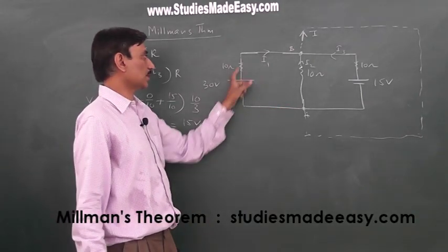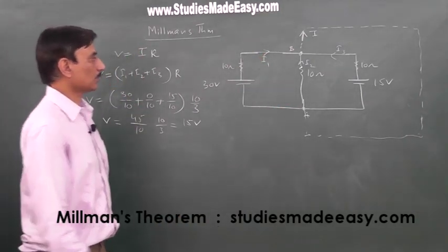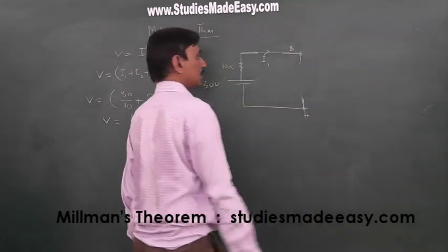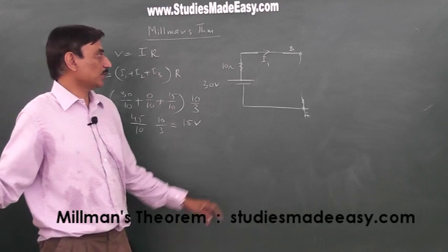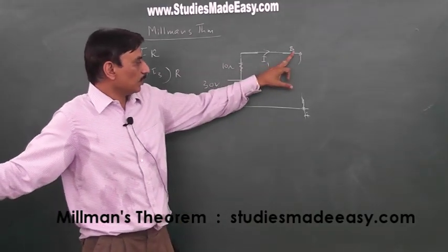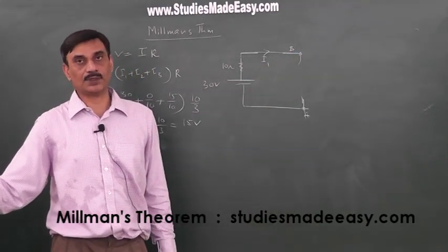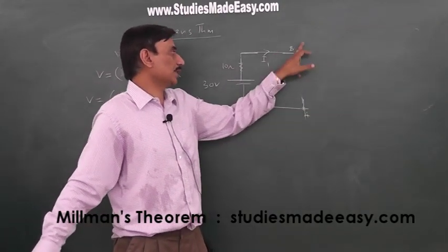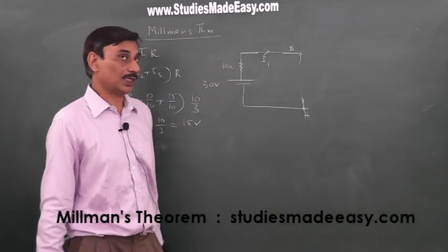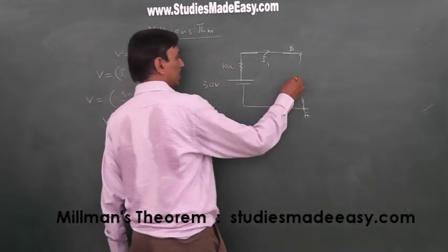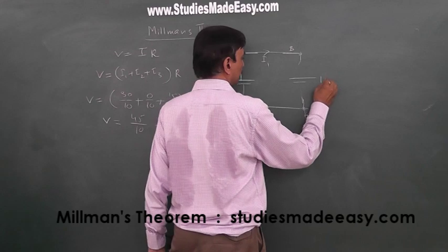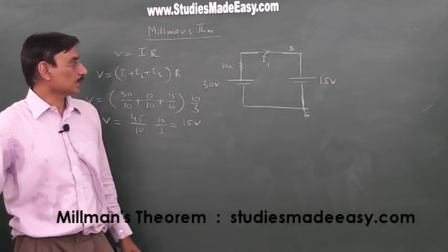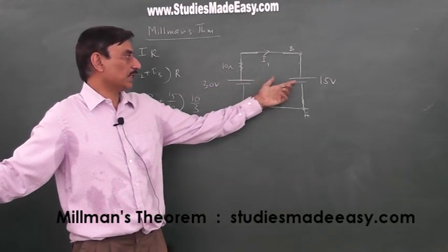Now, I am interested in finding this current I1 value. So, I remove this. We have found that the potential difference between A and B is 15 volts. And the current is going in this direction, that is, potential of this is greater than this. So, what I do is, I connect a battery of 15 volts like this. 30 volts is there, 15 volts is there.